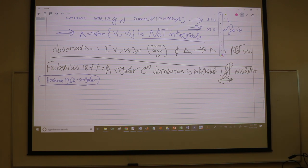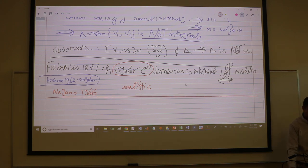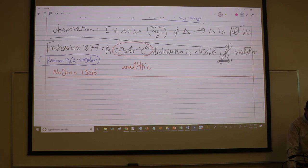But Nagano, 1966, he extended a little bit saying that when we can replace regular C infinity by analytic. If it's an analytic distribution then it's also integrable if and only if involutive. These are the results that we know about Frobenius theory.